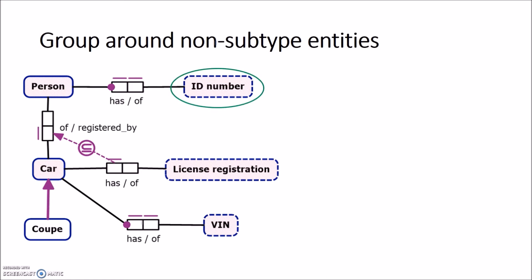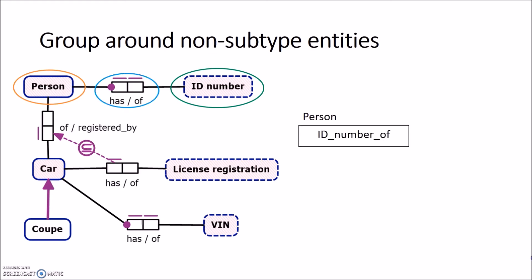Now let's create a table for 'person', mark person as grouped. It has two fact types linked to it. First is ID number — it's an identifying mandatory role, so we add a column for ID number. ID number is also identifying on the side of ID number, so we mark it as candidate key. It's a lexical object type, so no horizontal bar, and no parentheses because it's a mandatory role. Next is 'car', but it's not identifying on the side of person, so we don't add this column to the table.